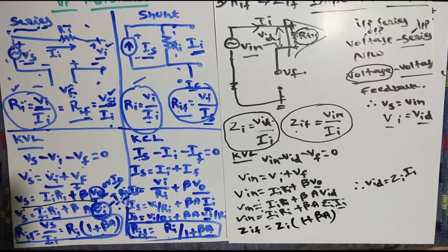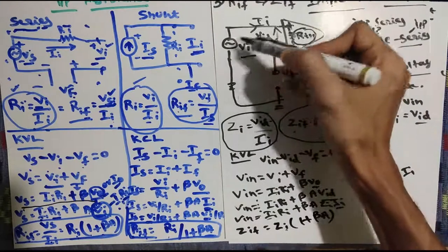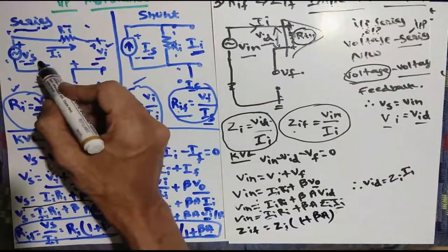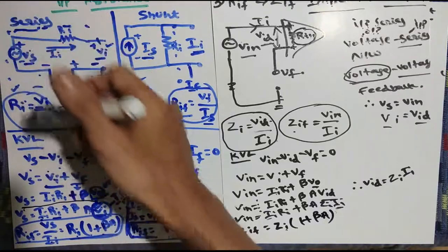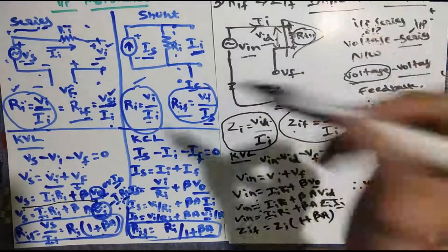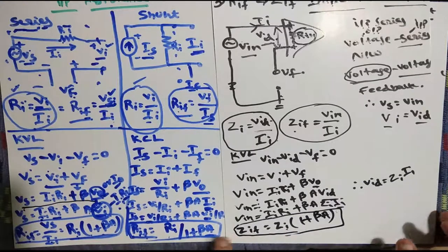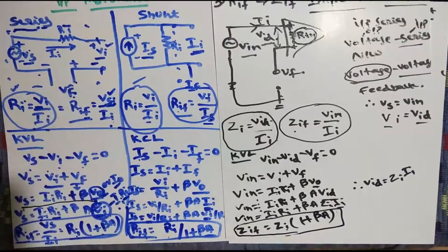Here I have taken RI but we are now using Zi, because it is an AC signal. We haven't specified AC or DC — it may be anything — but for AC signals we talk about impedance. So we use Zi. This is the simple format we used previously; the same method applies for finding Zif.